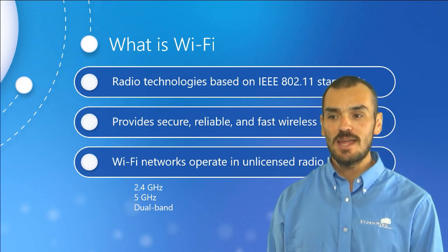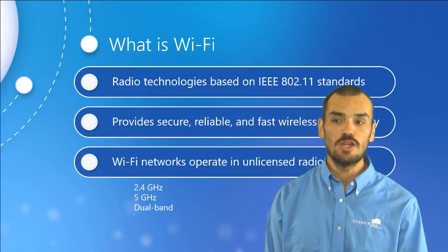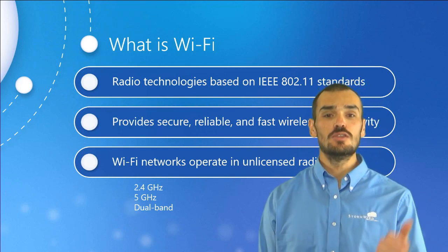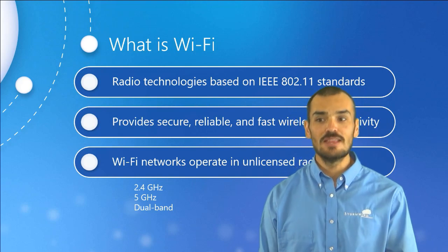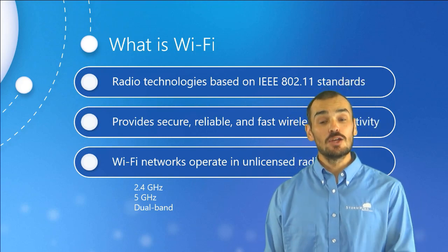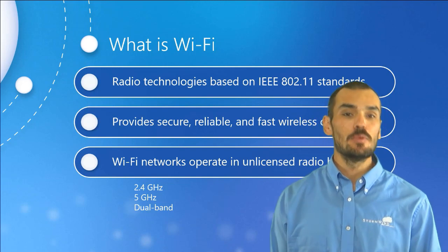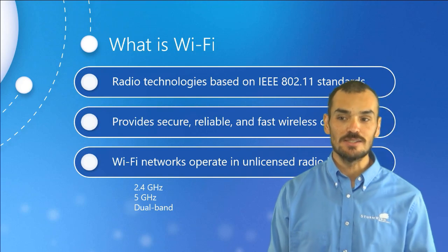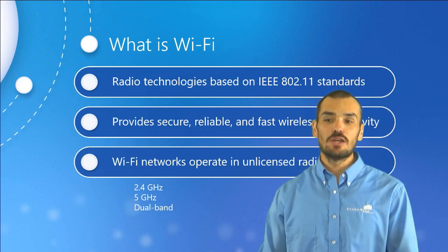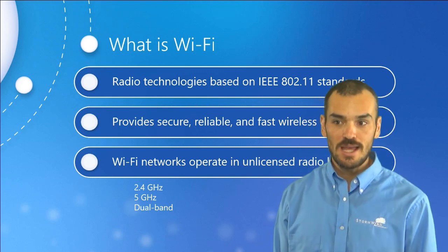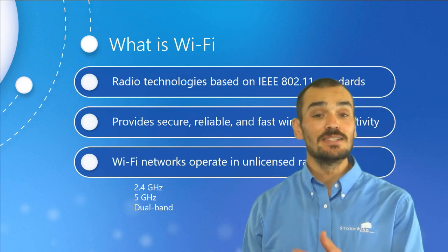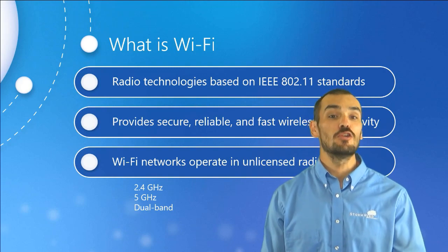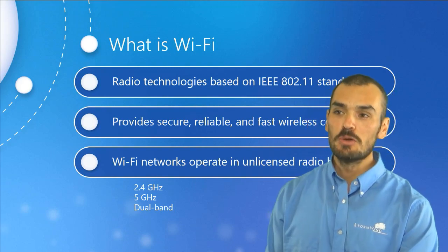The 802.11 standards specify two unlicensed radio bands for wireless networks: the 2.4 gigahertz band and the 5 gigahertz band. Equipment capable of operating within both radio bands is considered a dual-band device. The US Federal Communications Commission, or FCC, designates a radio band as unlicensed when the operator is not required to file for its use.